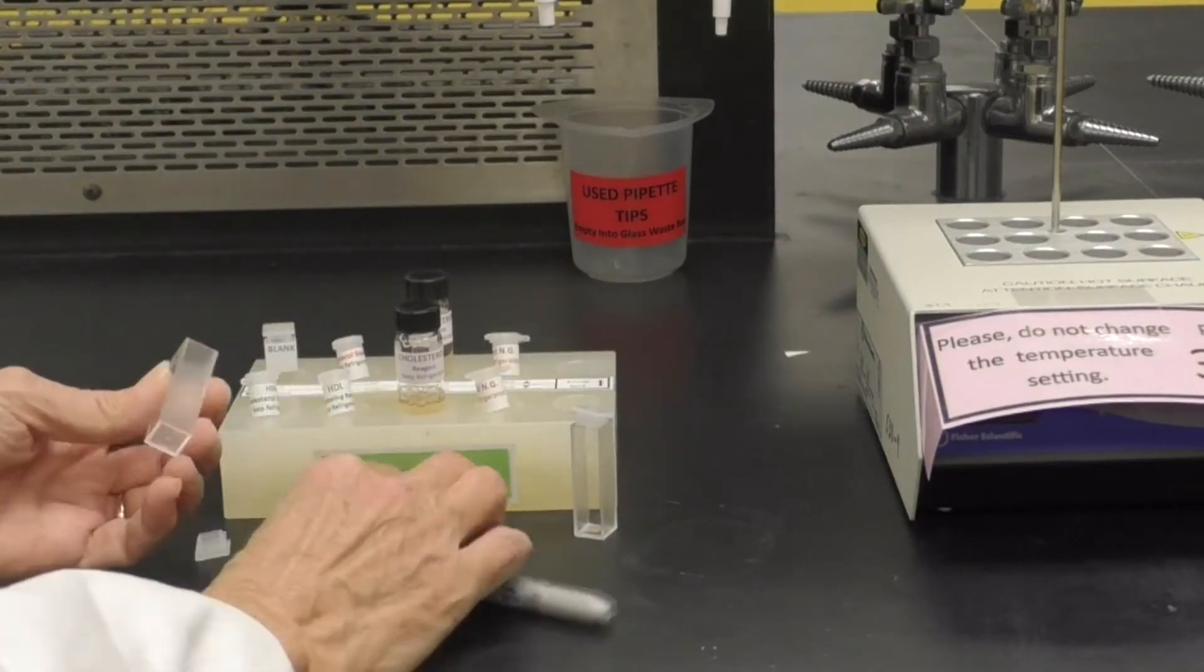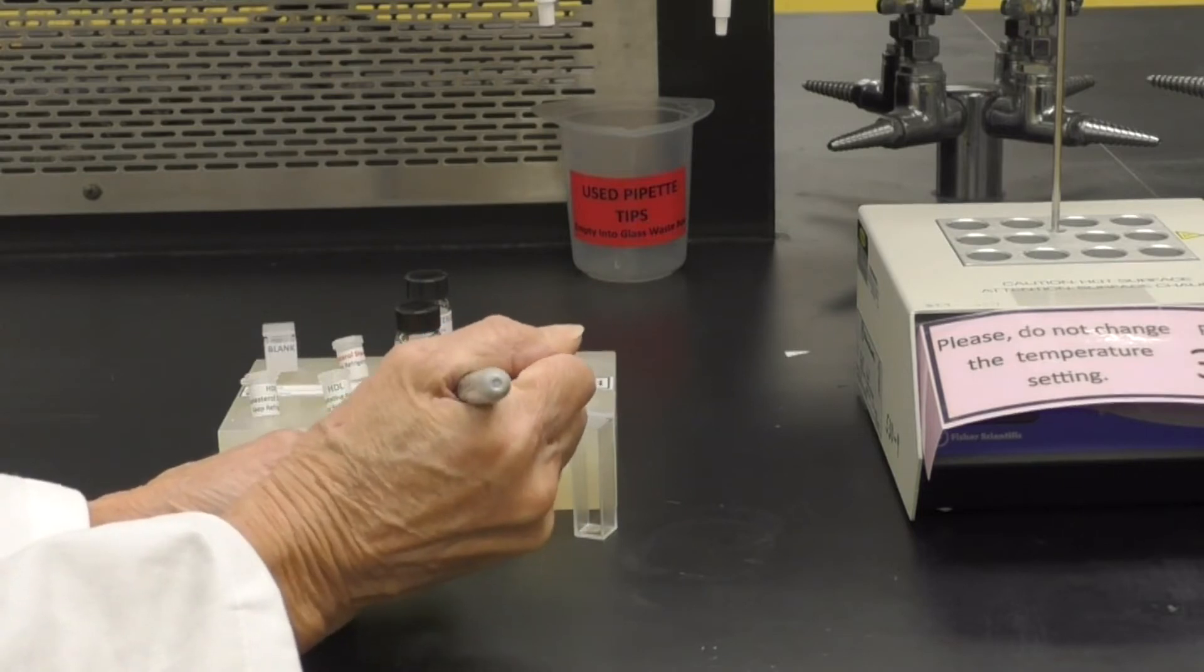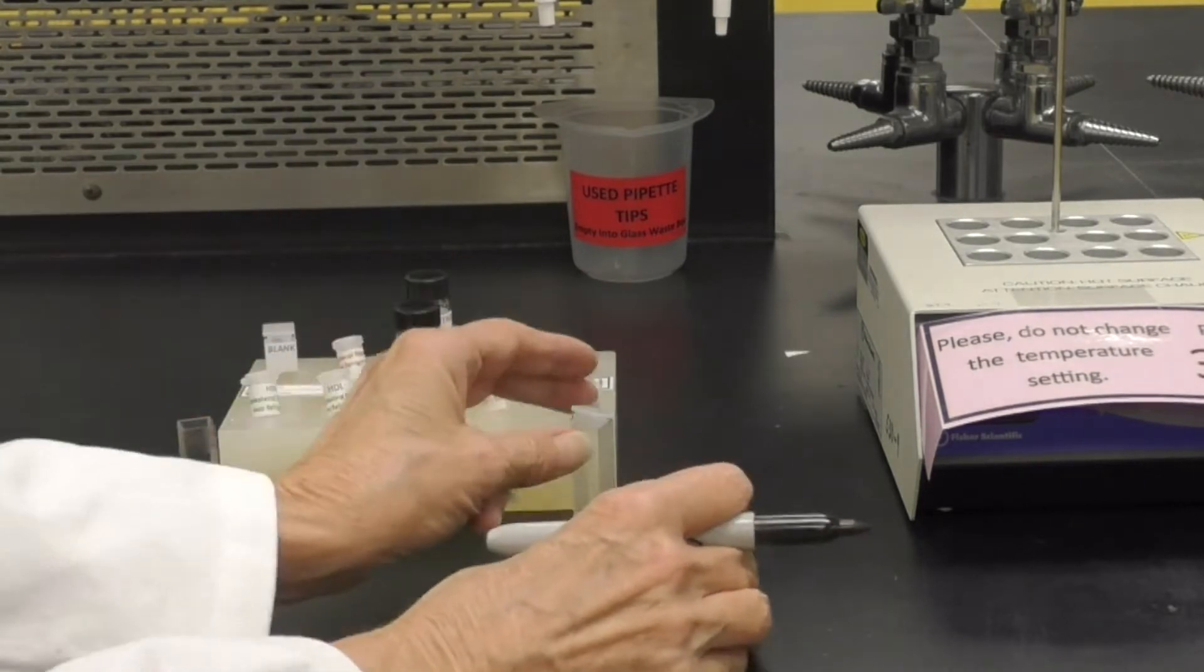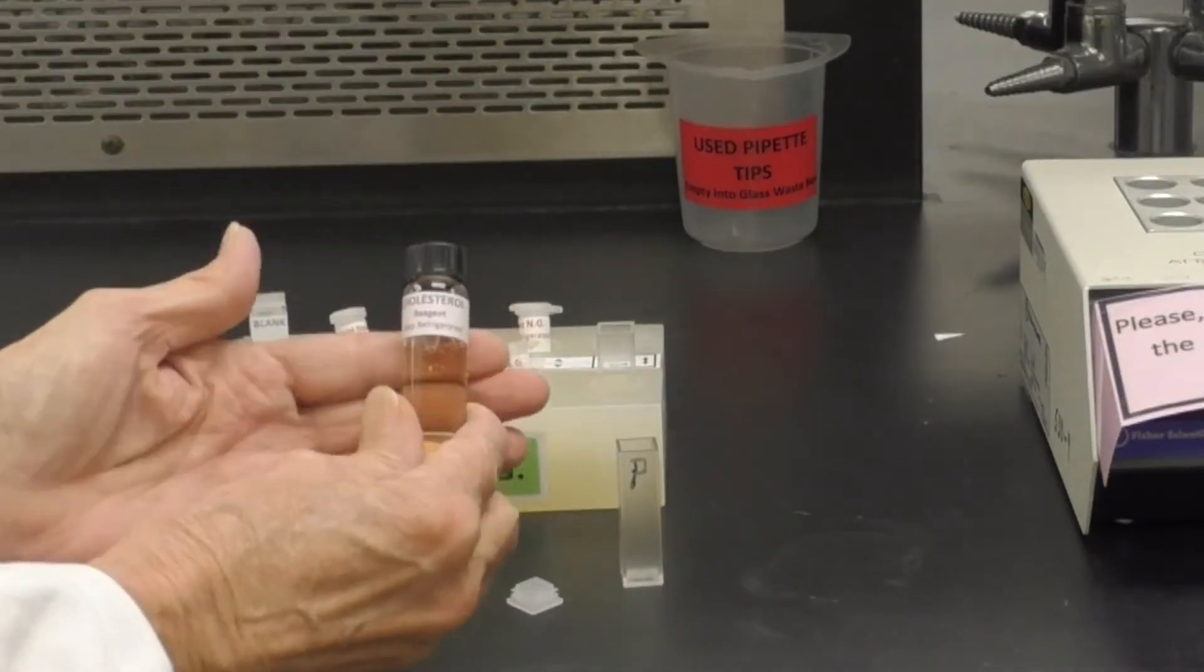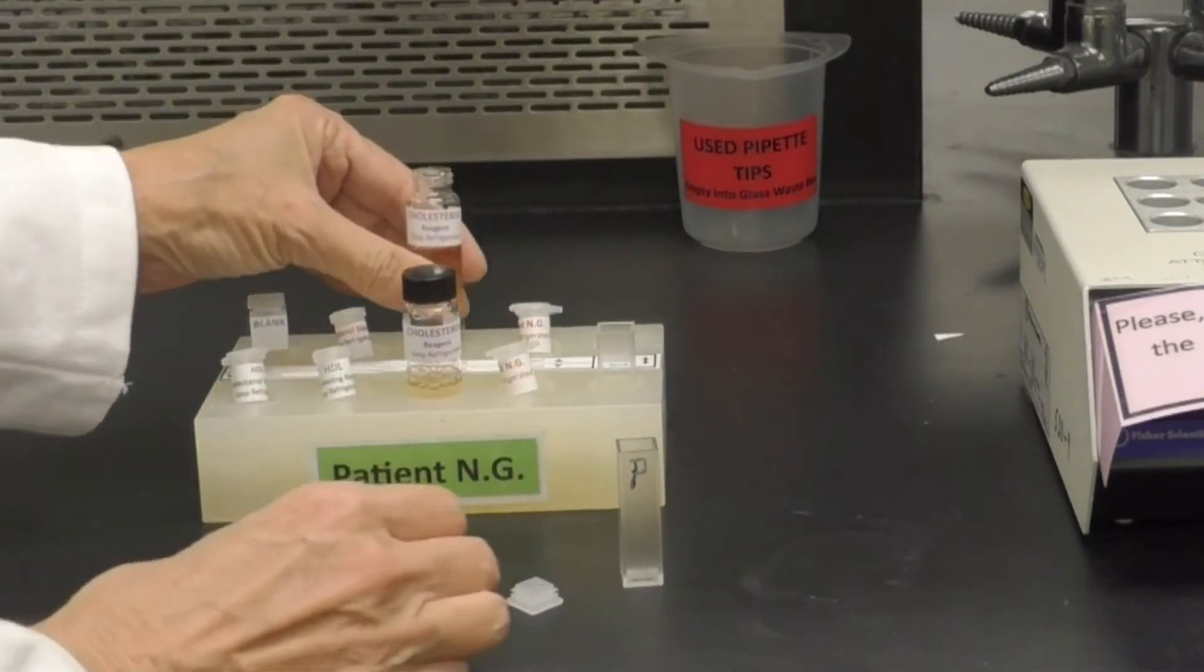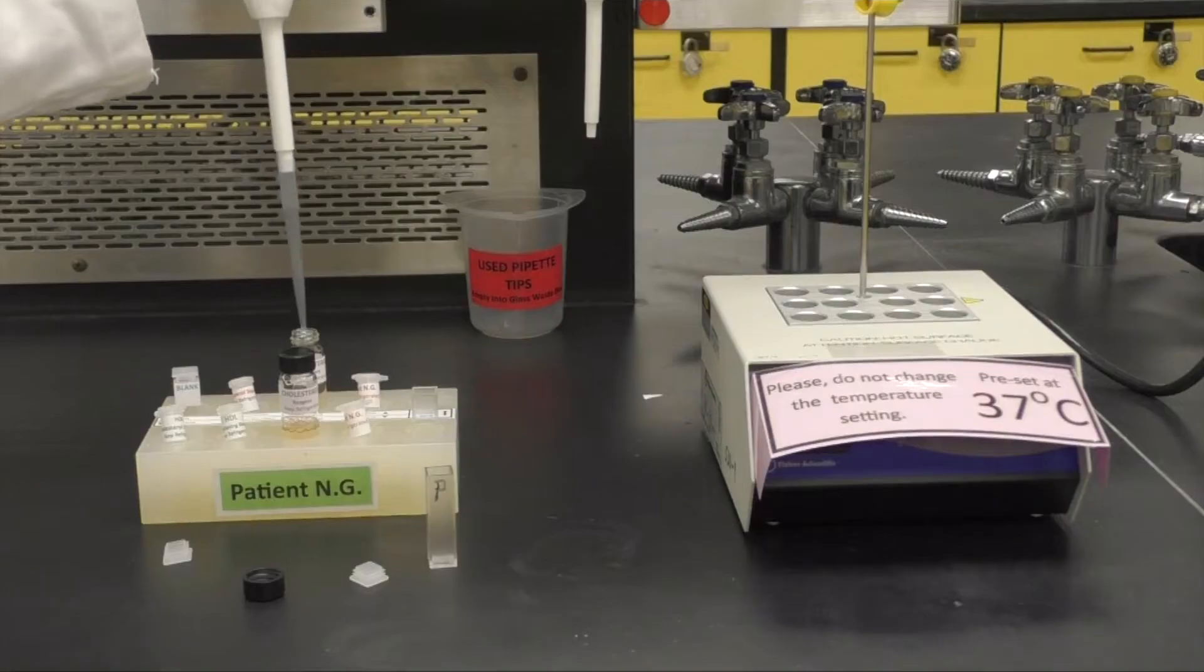To determine your patient's total cholesterol, label two cuvettes. Here we are using the letter P for patient and S for standard. Carefully pipette 2 mL, in other words 2,000 microliters, of the cholesterol reagent into each cuvette.